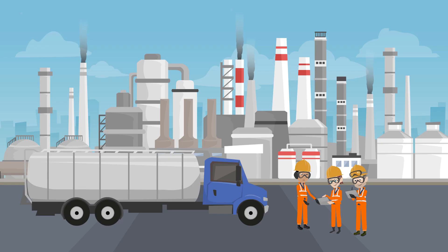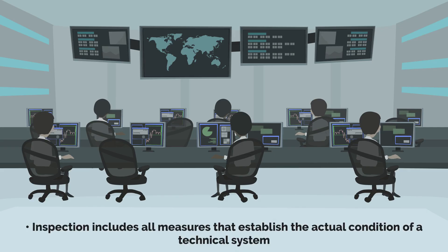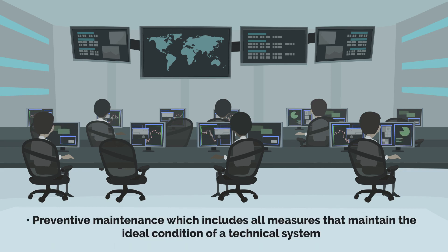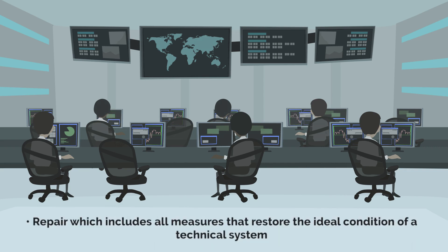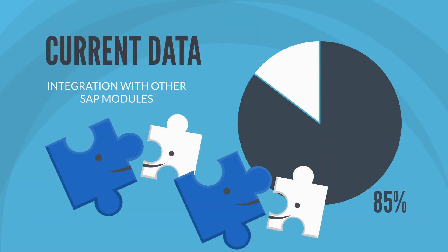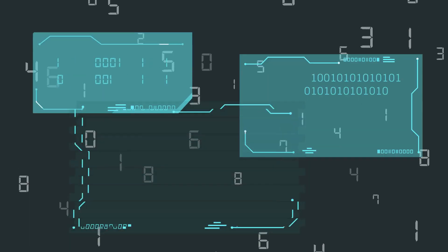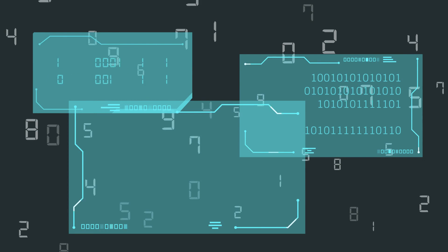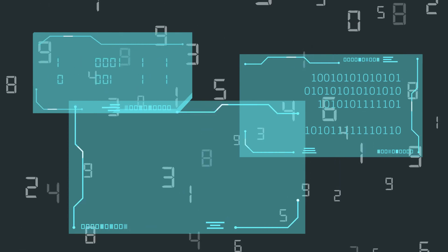SAP Plant Maintenance is a CMMS software that performs maintenance management by conducting three key activities: inspection, which includes all measures that establish the actual condition of a technical system; preventive maintenance, which includes all measures that maintain its ideal condition; and repair, which includes all measures that restore the ideal condition of a technical system. Through integration with other SAP modules, the maintenance data in the system is always kept current, and processes necessary for plant maintenance and customer service are automatically triggered in the appropriate areas.